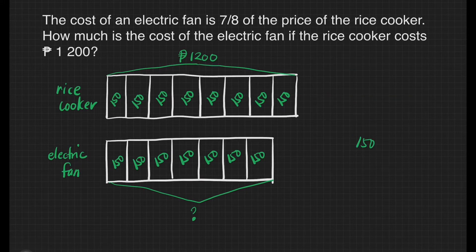Let's multiply 150 times 7. 0 times 7 is equal to 0. 5 times 7 is equal to 35. Carry 3 at the top of 1. 1 times 7 is equal to 7 plus 3 is equal to 10.